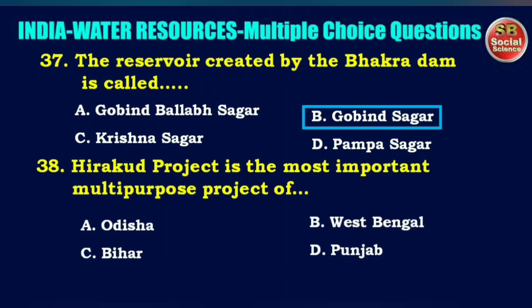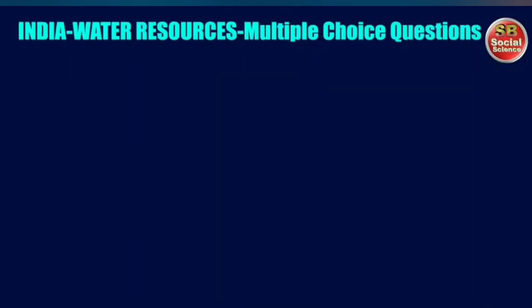The Bhakra-Nangal project is the most important multipurpose project of — options are Rajasthan, West Bengal, Bihar, or Punjab. The right answer is option A: Rajasthan.